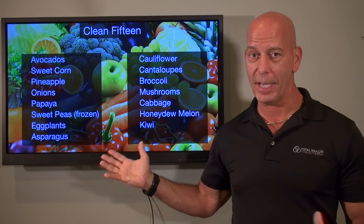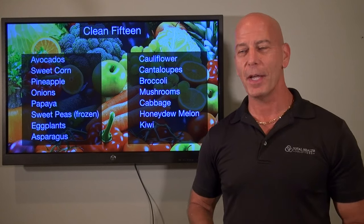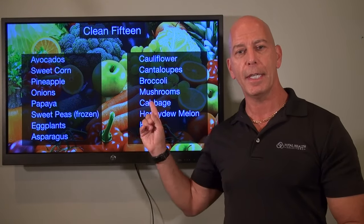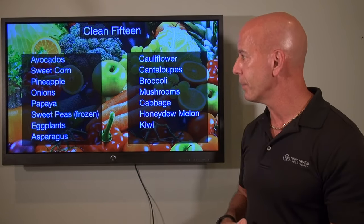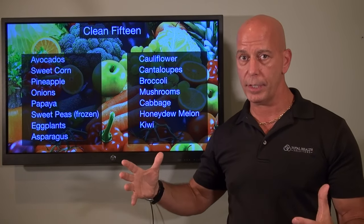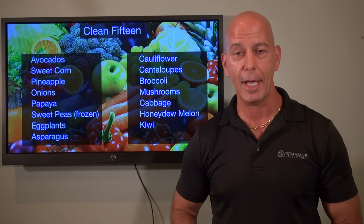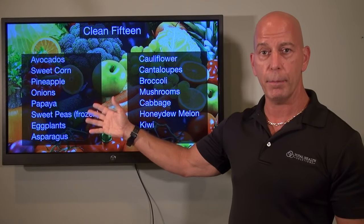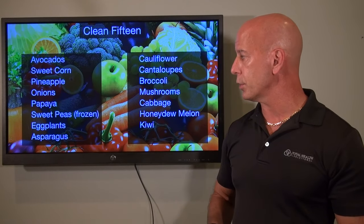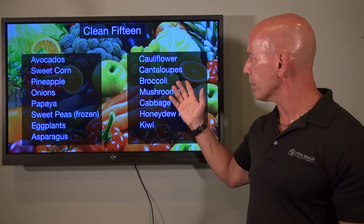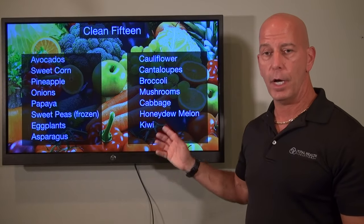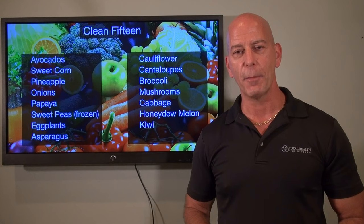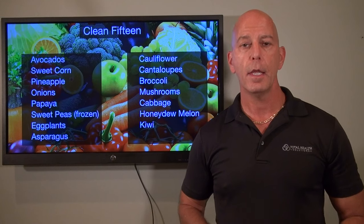Now what about the clean 15? These are the ones you can buy conventional and feel pretty good about. Avocados have a thick skin, so it's hard for pesticides to get in. Sweet corn has the husk around it. Pineapple has a thick skin. Onions have a skin. Papaya has a very thick skin. Sweet peas if frozen, eggplant, asparagus, cauliflower, cantaloupe, broccoli, mushrooms, cabbage, honeydew melon, and kiwi all have thicker skin. These are the ones you can get away with without having to buy organic, though if you can, certainly go organic.